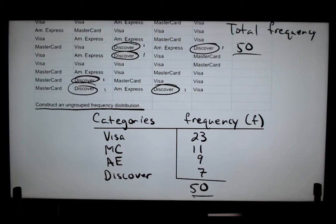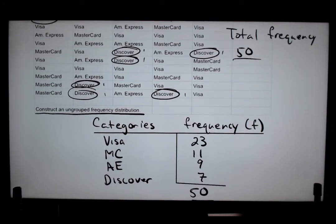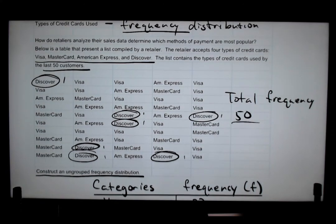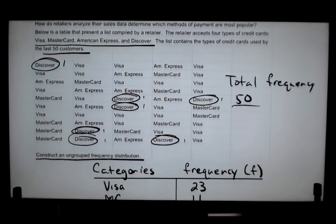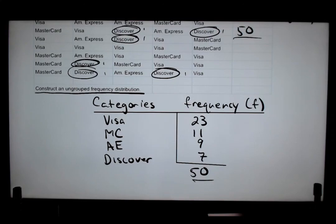After that, you're done, and you can do any analysis or draw any inferences you want. That's really all you have to do — for an ungrouped frequency distribution, just write down your categories and count. I hope this video helps you in your statistical research and knowledge. Practice, practice, practice — study, study, study. Keep at it and work at it.